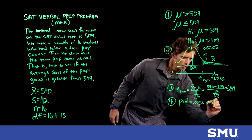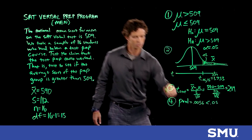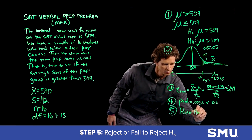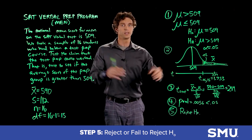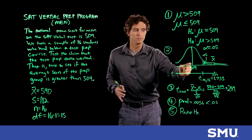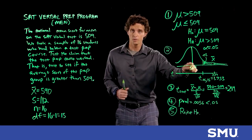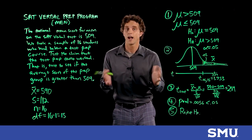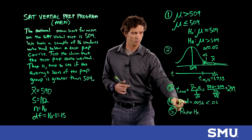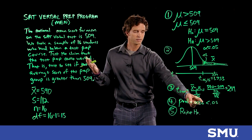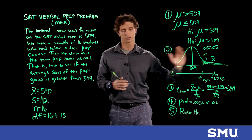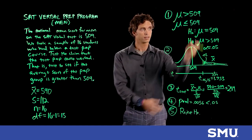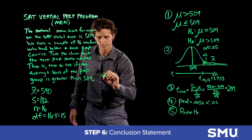So we reject H₀. If the true mean were 509, when pulling samples of size 16 we wouldn't expect to see something as large as 590. It could happen, but it's very unlikely. How unlikely? If we ran this test 10,000 times, we'd only get something that extreme about 56 times. So we reject the statement that the mean is 509.